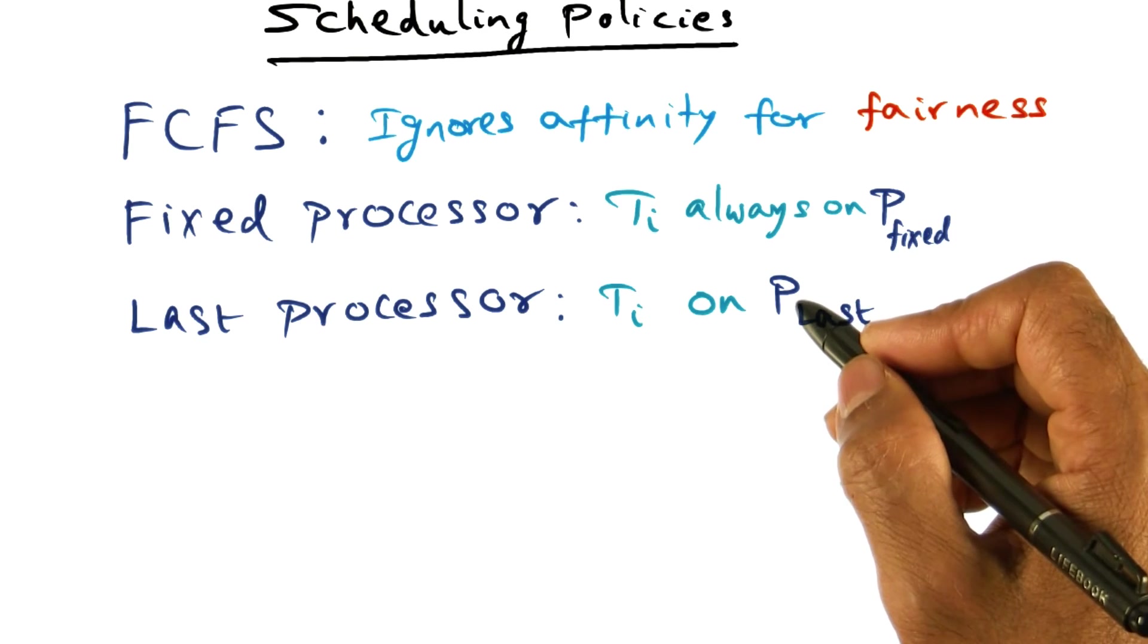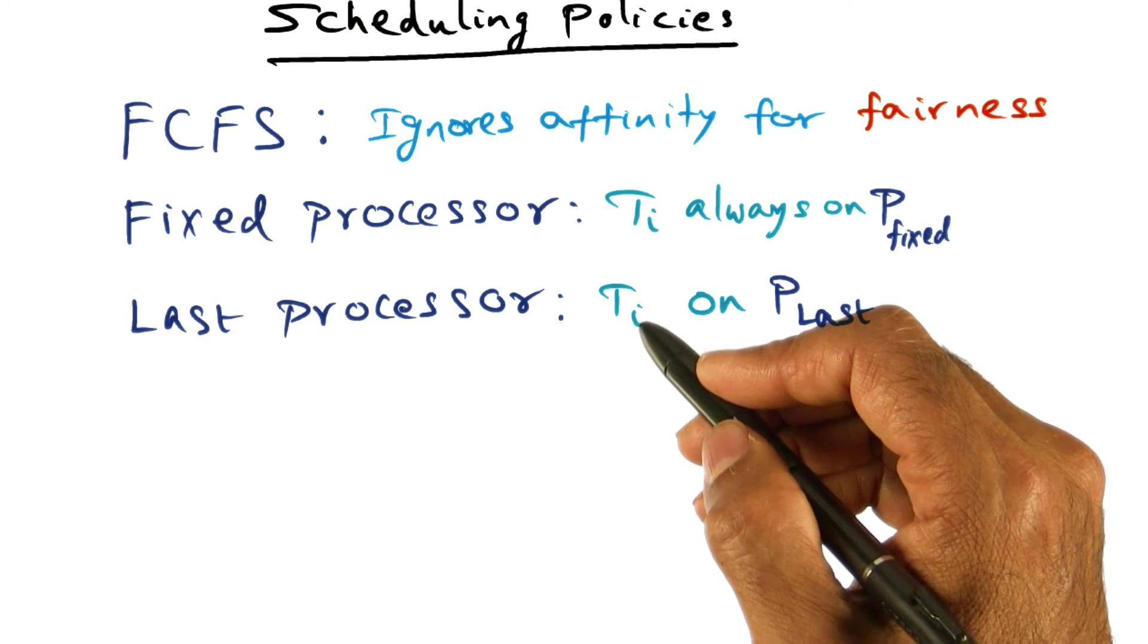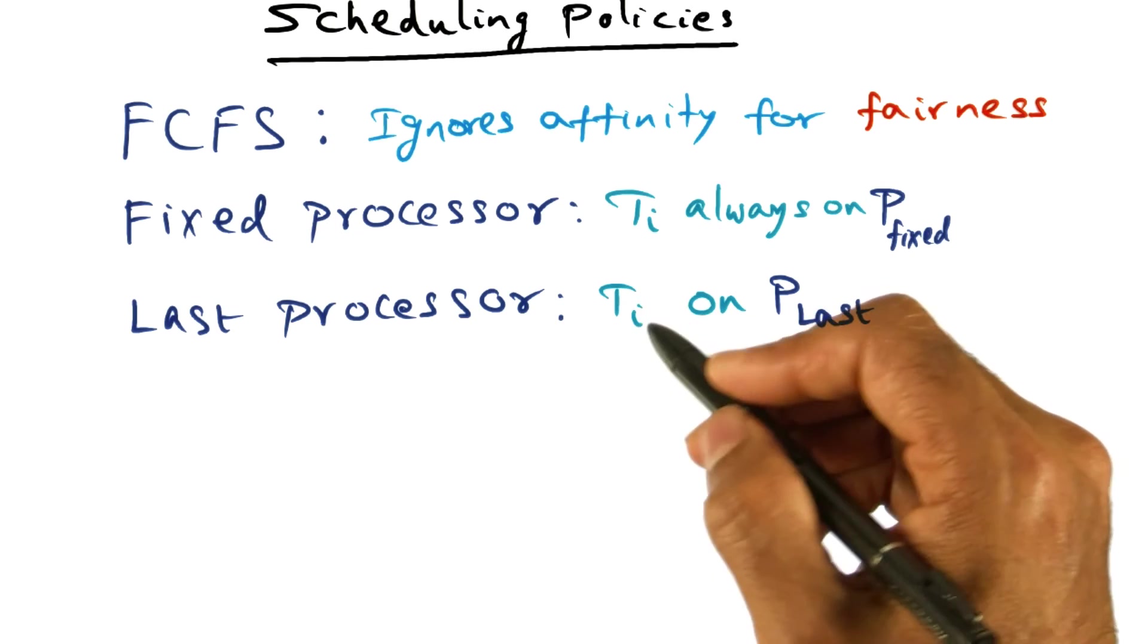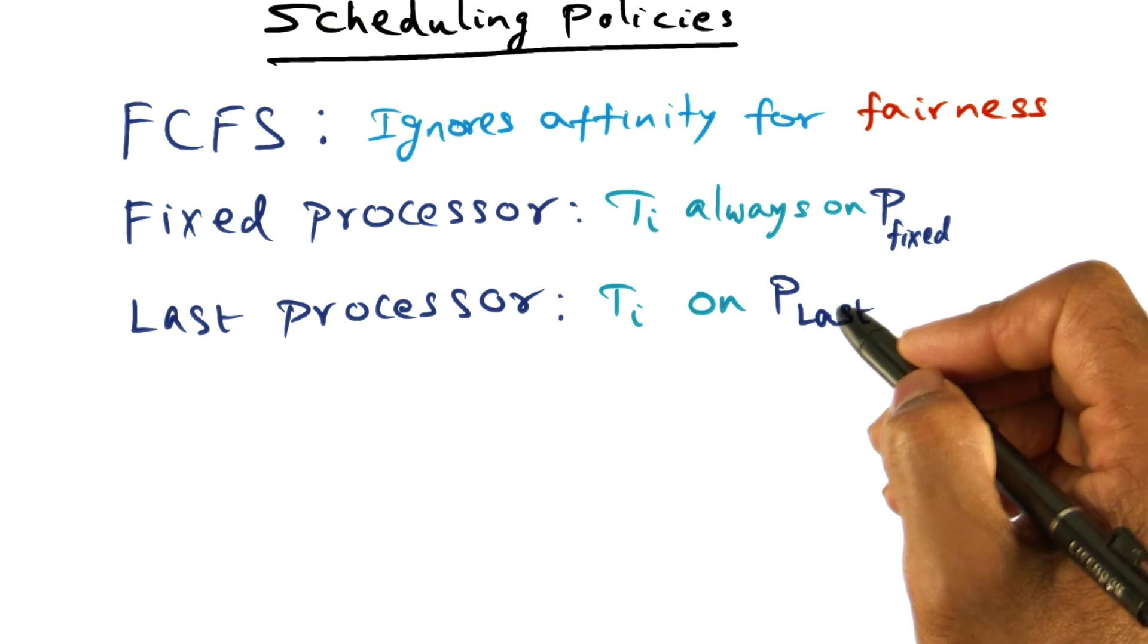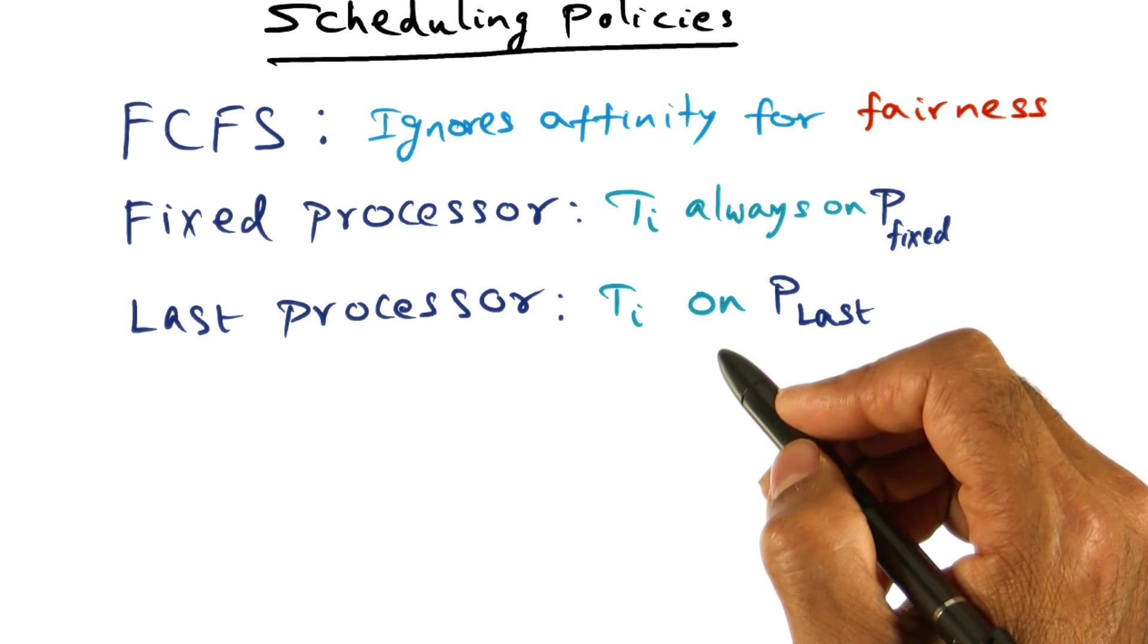Then when this processor is coming around looking for work, it'll see TI is there, it used to run on me, I'm going to pick that guy to run on me again. And as you can imagine, this is giving preference to the fact that there could be affinity for TI to this processor because it used to run on this. So that is what is called Last Processor scheduling.